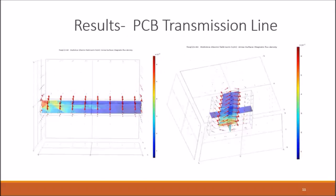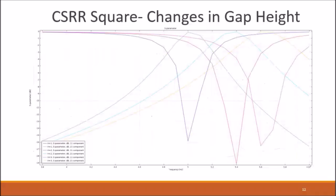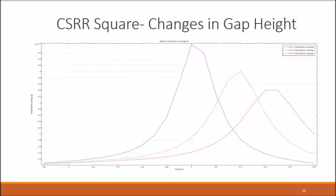Here we can see the results obtained from simulation of the PCB transmission line. The red arrows indicate the direction of the magnetic field around the transmission line. Next, we have the results obtained from simulation of the square complementary split ring resonator with 4 changes in gap height, along with a graph of total electric energy versus frequency. As we can see, the total electric energy decreases as the gap width increases.